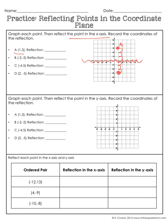So the reflection of point A lands right here. We call that reflected point A' with a little apostrophe. The ordered pair of that point is 1 to the right, 3 down — so it's positive 1 and negative 3. A' is at (1, -3). Now I'm going to erase this.